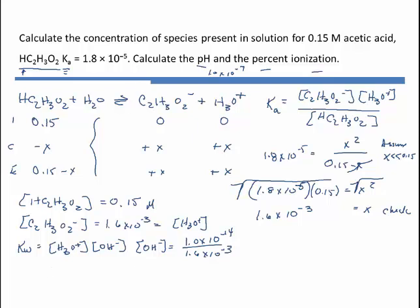The last thing we're going to do is calculate the pH and the percent ionization. We know that pH is equal to the negative log of the H3O plus concentration, which was 1.6 times 10 to the minus 3. This gives me a pH of 2.78. That is an acidic solution.